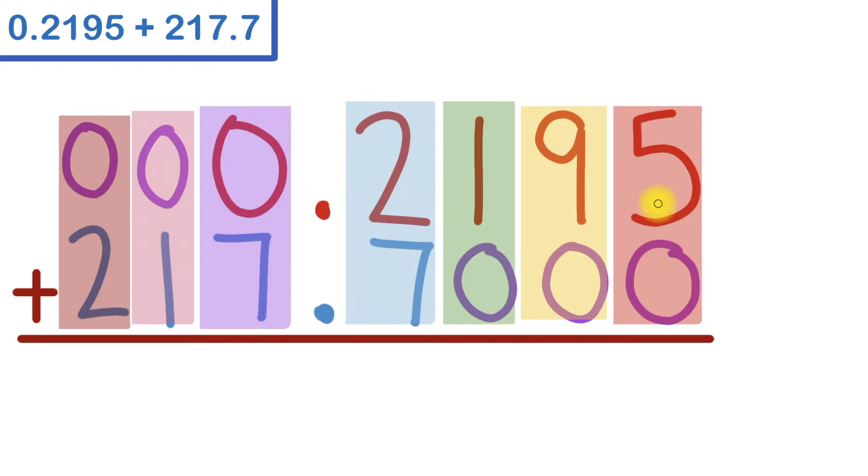So now we can start our addition, and that always begins at the right column. 5 plus 0 is 5. 9 plus 0 is 9. 1 plus 0 is 1. 2 plus 7 is 9. I'll bring down my decimal point.